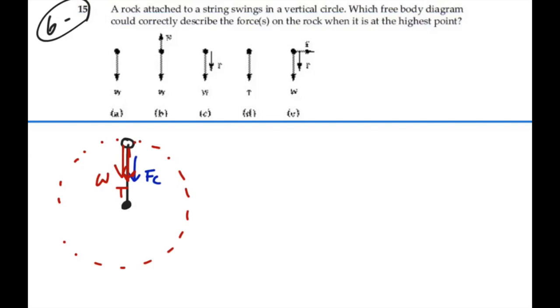So if we did a free-body diagram of this rock, it would have two forces on it: weight and the tension of the cord. And that would be what is supplying the centripetal acceleration in that direction. So that would be our full free-body diagram.